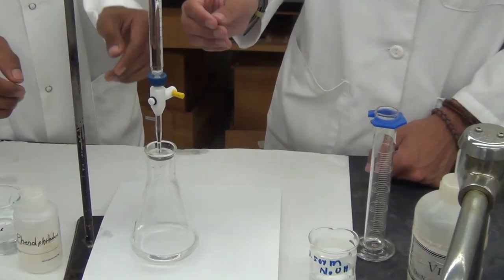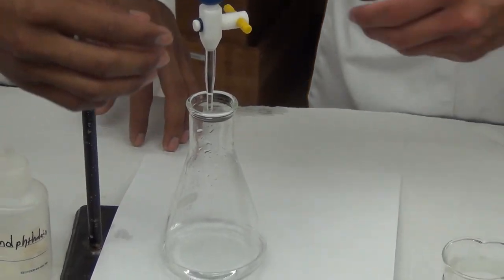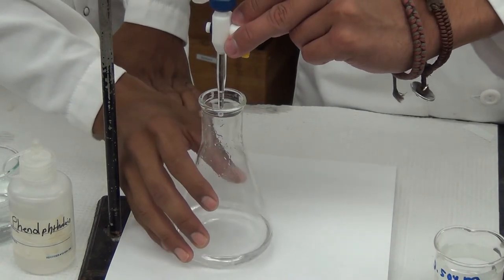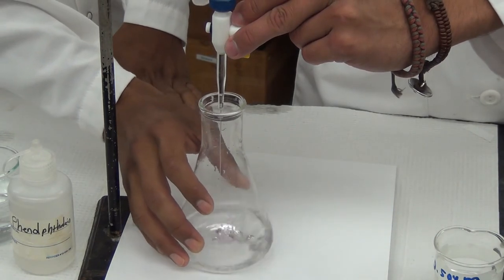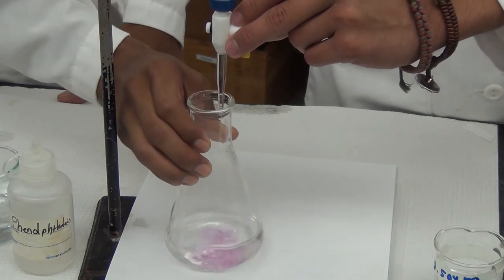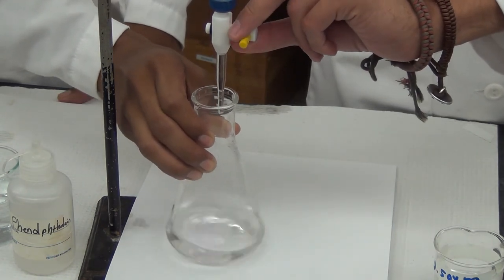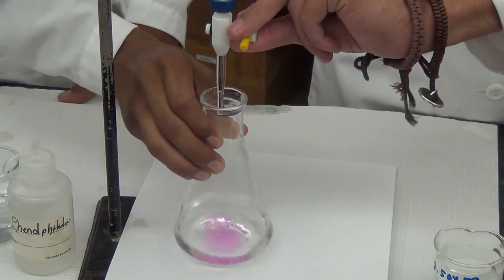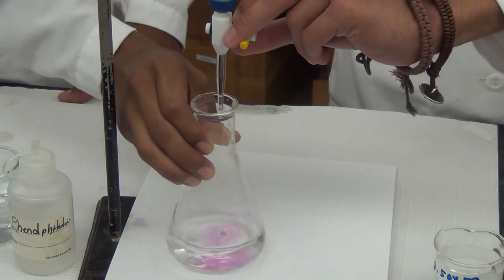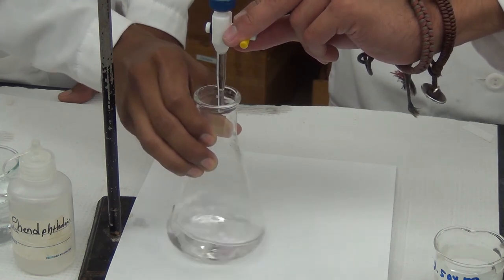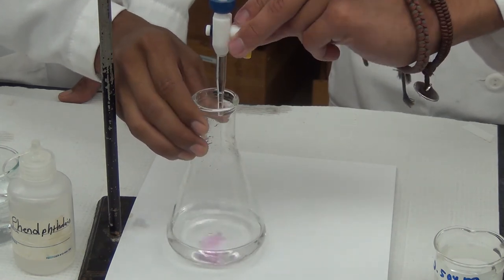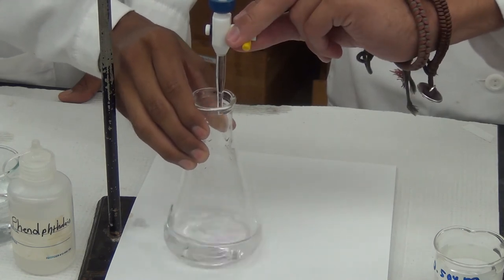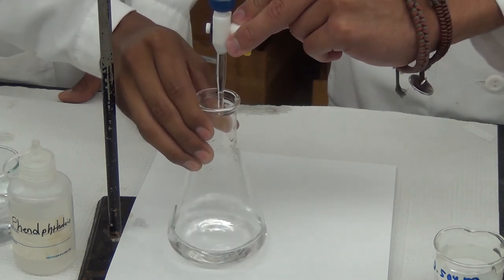To reach the endpoint, slowly add titrant to the analyte using the stopcock. As you approach the endpoint, color will begin to appear in the analyte. Slow down to one drop at a time at this point, fully mixing the drop in until the color dissipates.